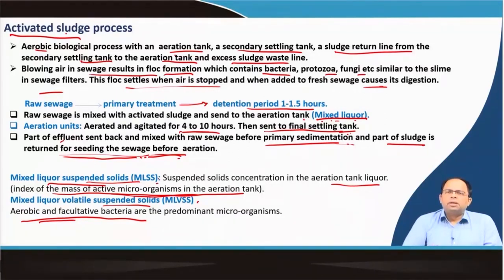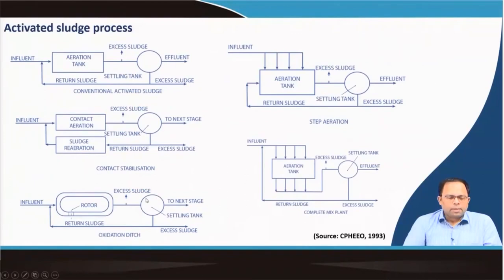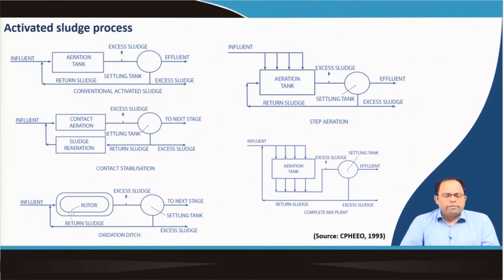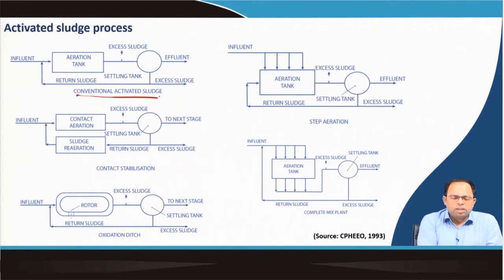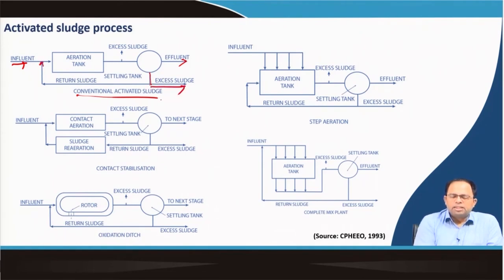Different forms of the activated sludge process exist. In the conventional activated sludge process, influent from the primary sedimentation tank enters the aeration tank, biological floc forms, and the effluent goes to a settling tank. Excess sludge is partially returned and mixed with the influent before the aeration tank, and some is taken out. Only a certain part of the sludge is reused to facilitate further removal of organic matter.